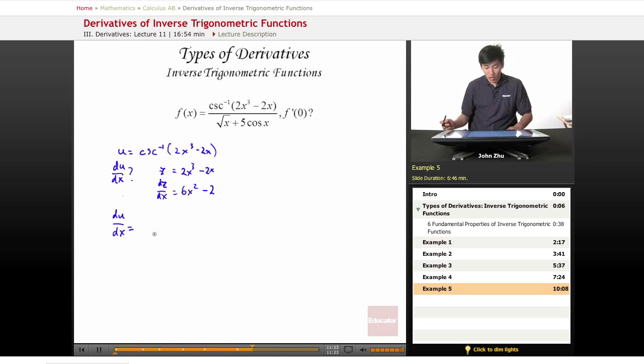which by our table of properties, if we remember, is just the negative version of a secant inverse. So that is negative 1 over absolute value of u times the square root of u squared minus 1. So we have to plug our u back in, or in this case, our z.